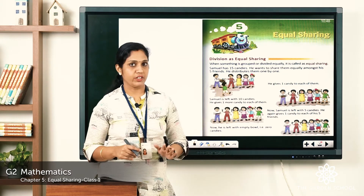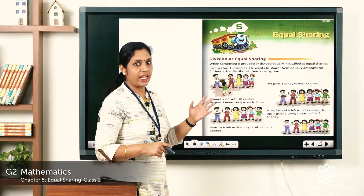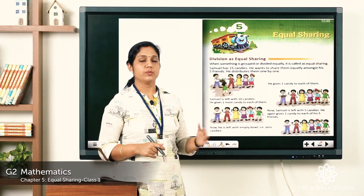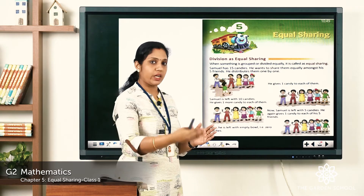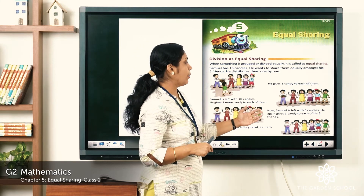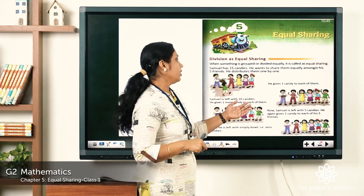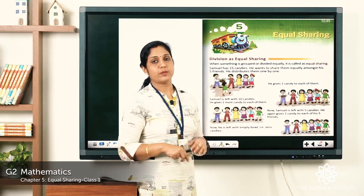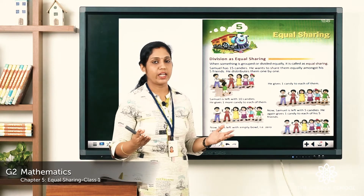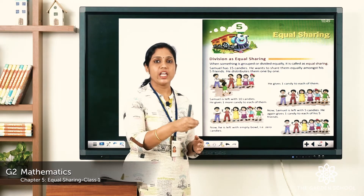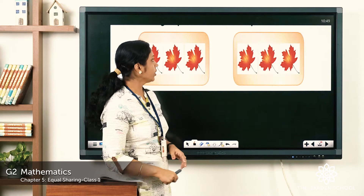Samuel was having 15 candies. He gave one to each of his five friends, so now he is left with 10 candies. He gives one more candy to each of them, leaving him with 5 candies. Then he gives one more candy to each friend again. Now Samuel has zero candies — he has distributed all 15 candies equally among his five friends. That is equal sharing.